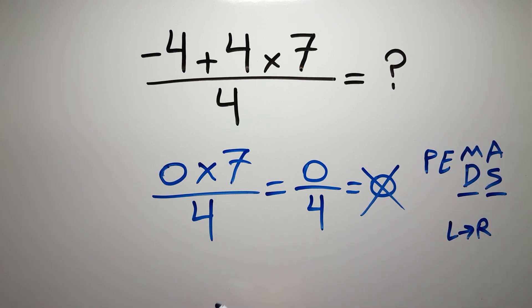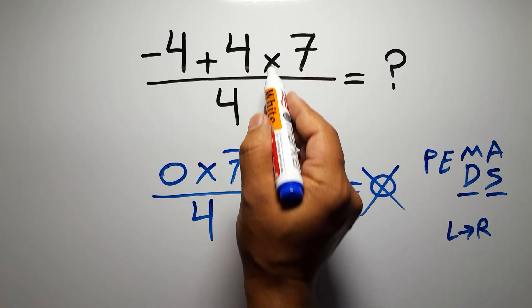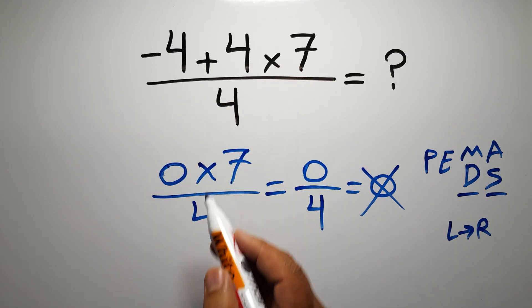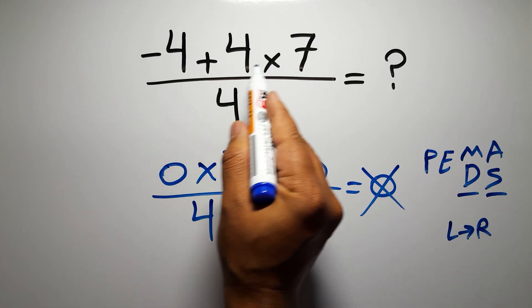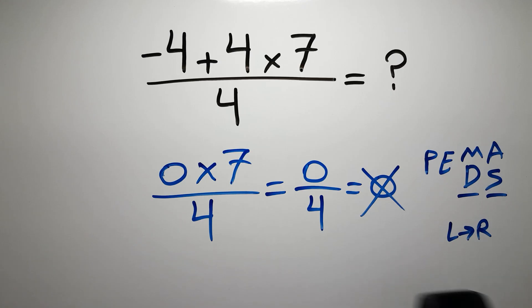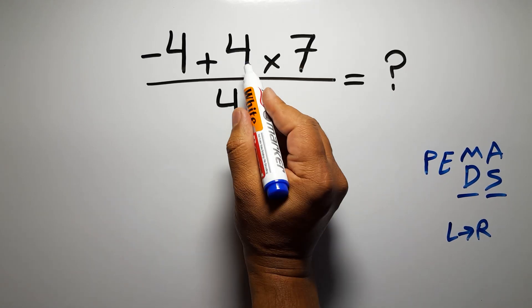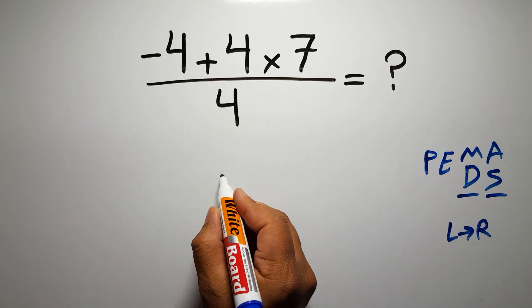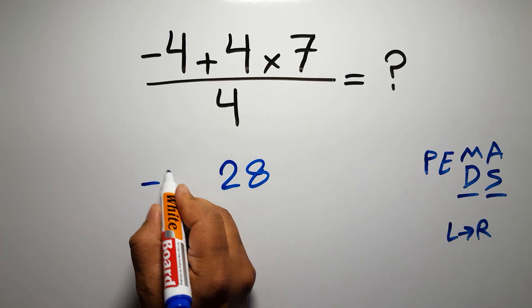So here in the numerator, first we have to do this multiplication, not this addition. If you do this addition before this multiplication, it is wrong. So first, 4 times 7, which gives us 28.